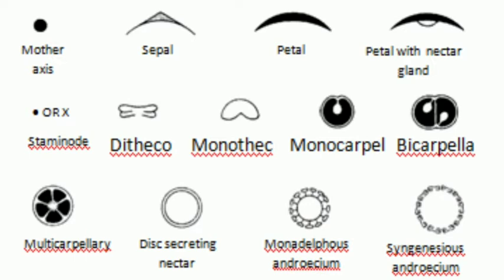Disc secreting nectar — some flowers have a disc below the ovary which secretes nectar. That nectar will be used by honey bees for pollination or for preparing honey. So you can make two rounds above the ovary to represent the disc. Coming to stamens, over the ovary you can show the pollen grain number. If there are many, you can show some countable number. If they are exactly known — 5, 10, like that — you can show that exact number.